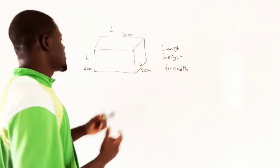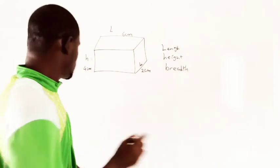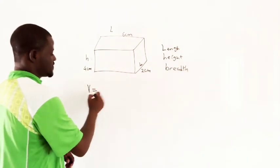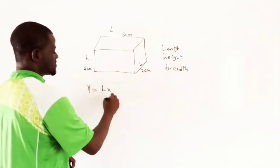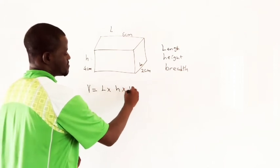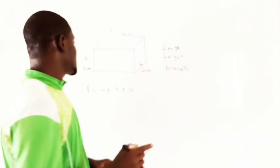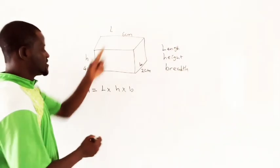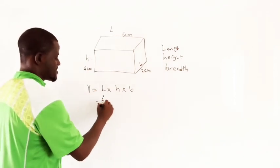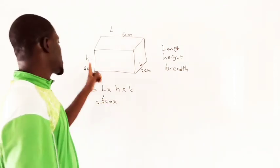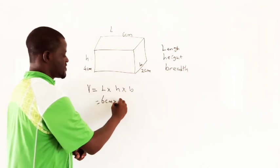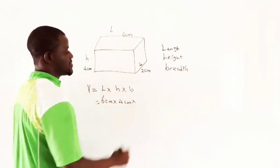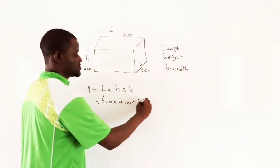The volume of a cuboid is V equals length times height times breadth. Now our length is 6 cm, our height is 4 cm, and our breadth is 2 cm.